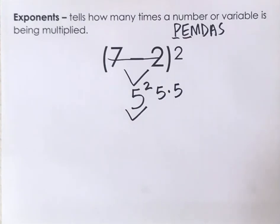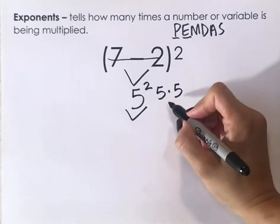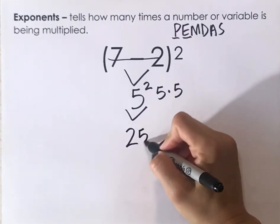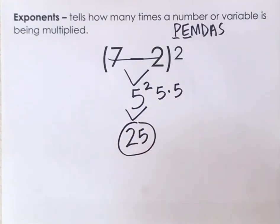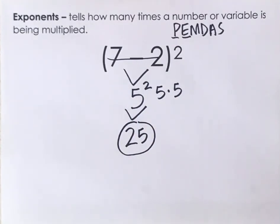not 5 times 2, 5 times 5. And 5 times 5 is 25. So the answer for this problem is 25.